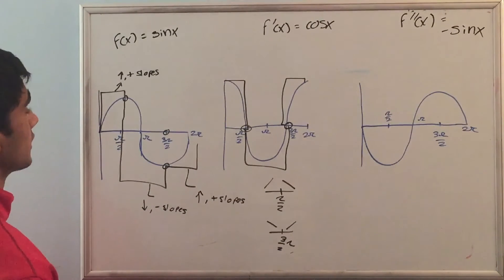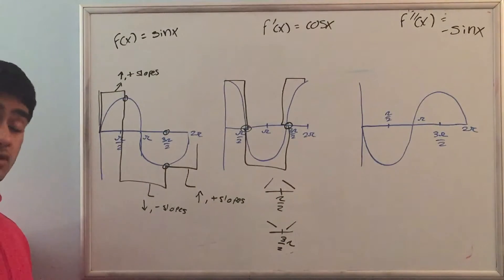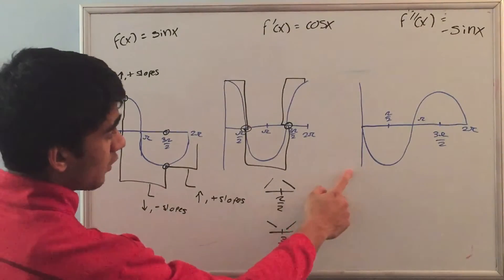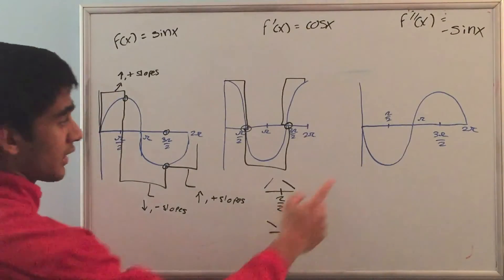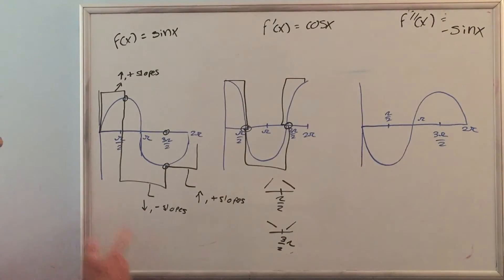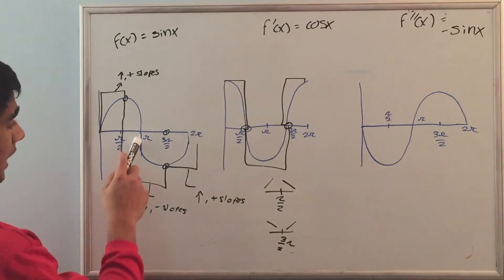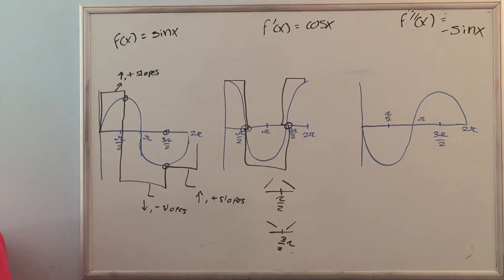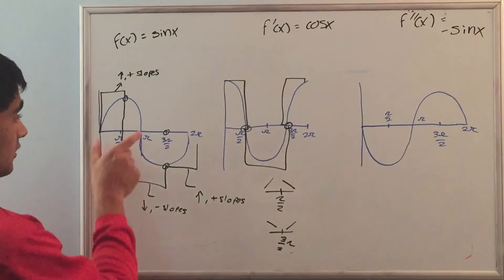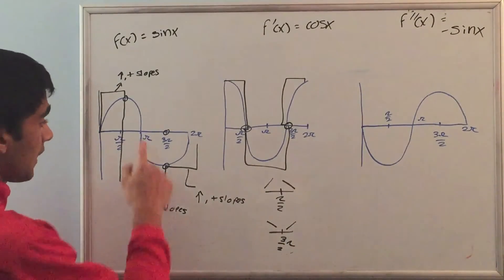The next relationship I want to look at is between the original function and the second derivative, f double prime x equals negative sine x. The second derivative mostly has to do with concavity and points of inflection. If we take the values from 0 to pi, the second derivative is negative. And from 0 to pi over here, the original function f of x equals sine of x is concave down — it's like a dome. And from pi to 2 pi, the second derivative is positive, and the original function is concave up, as seen by this u-shape.